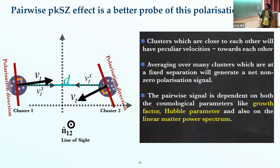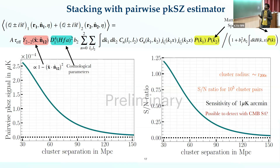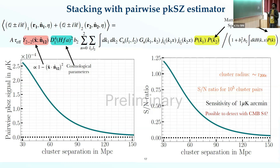This polarization signal will depend on the growth factor, the Hubble parameter, and the linear power spectrum. We calculated the amplitude as a function of the inter-separation distance between galaxy clusters. Adding the Stokes parameters at one cluster with another and taking an ensemble average gives this formula. Notable is that cosmological parameters enter through the growth factor, the growth rate, and the scale factor, along with a square of the linear matter power spectrum — because we had to go to non-linear density fields since the linear-order term contributes nothing.